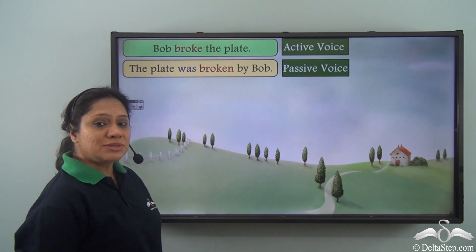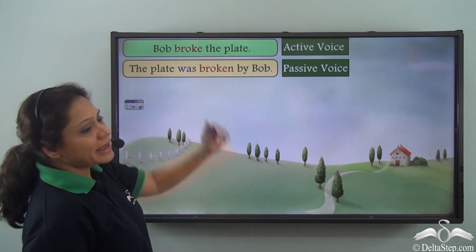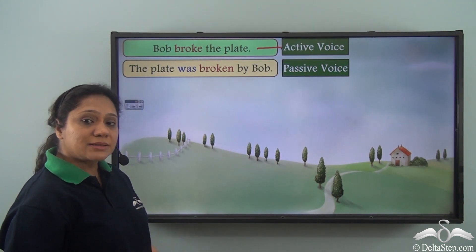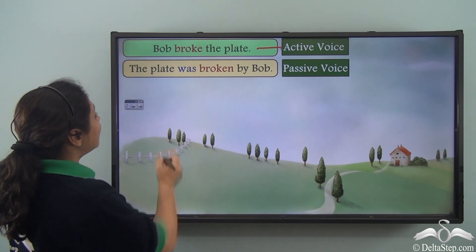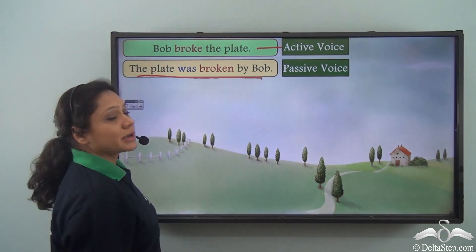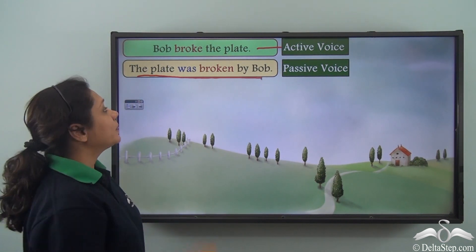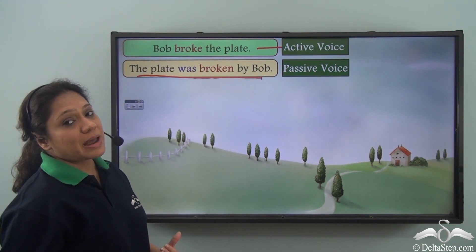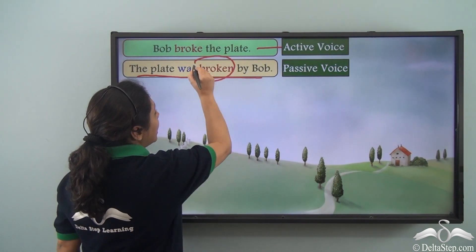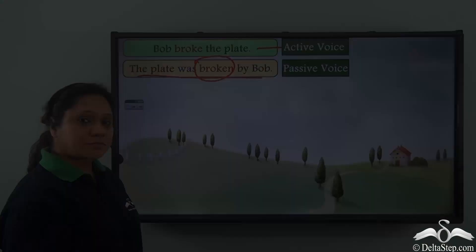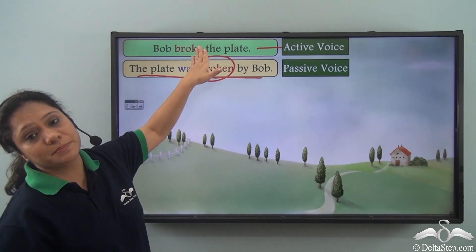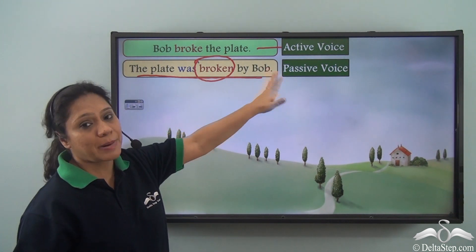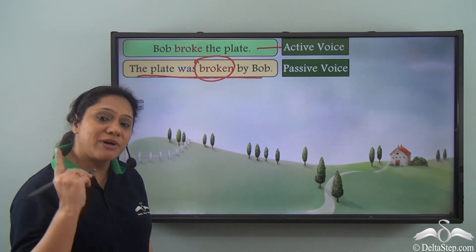Now look at the two sentences. 'Bob broke the plate' — this is in the active voice. If we write this in the passive voice, we write it as 'The plate was broken by Bob.' There is no participle in the active voice, but when we write the passive voice we have used the past participle 'broken.' So the passive voice has one past participle more than the active voice.